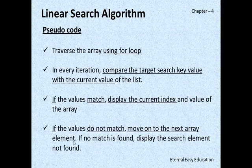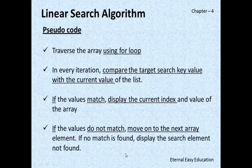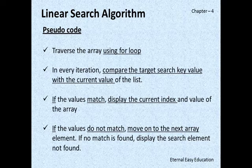If the values do not match, move on to the next array element. If no match is found, display the search element not found. That means we are going to search one by one. First it will search, next it will search, and whenever it finds the element, it will say found and it will give the index value.